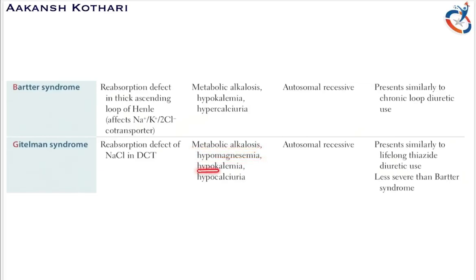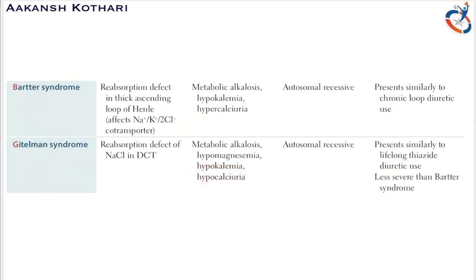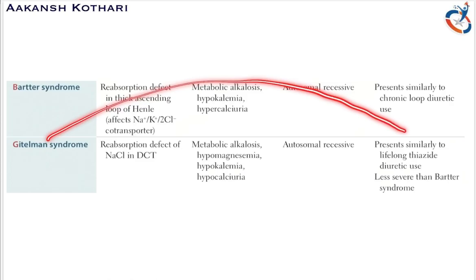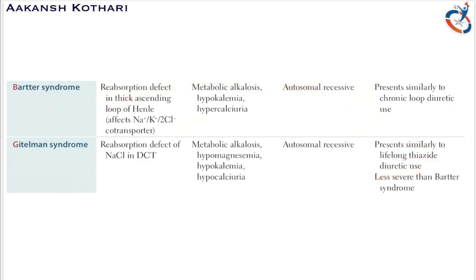In Gitelman syndrome there is metabolic alkalosis, hypomagnesemia, and hypokalemia. The distinguishing feature between Bartter syndrome and Gitelman syndrome is hypocalciuria in Gitelman versus hypercalciuria in Bartter. Just as Bartter syndrome was related to the use of loop diuretics, Gitelman syndrome is similar to the use of thiazide diuretics, which act on the distal convoluted tubule.